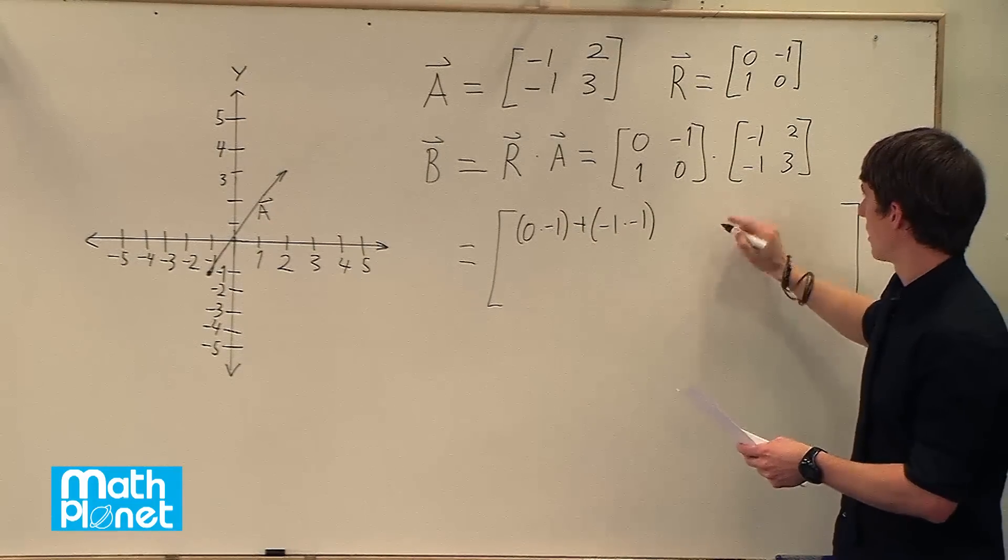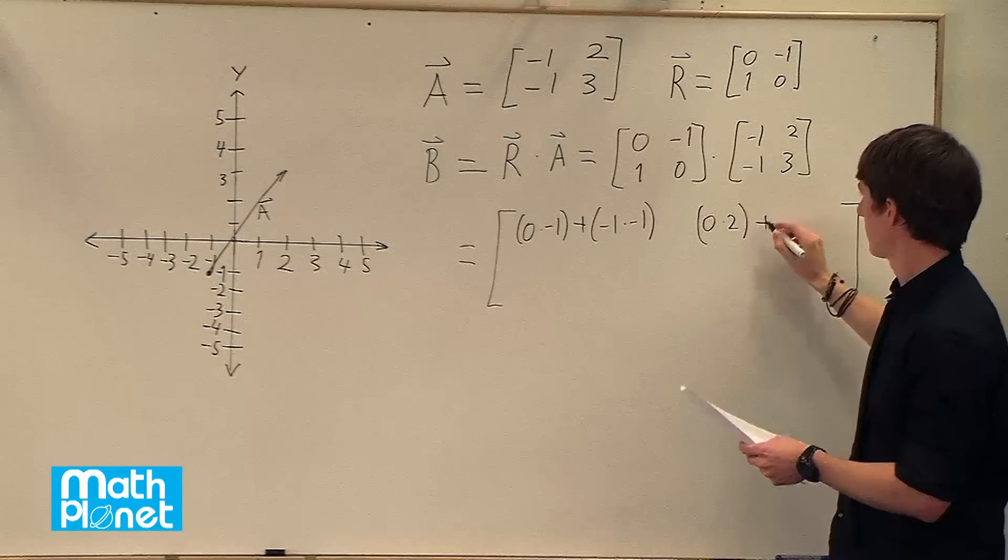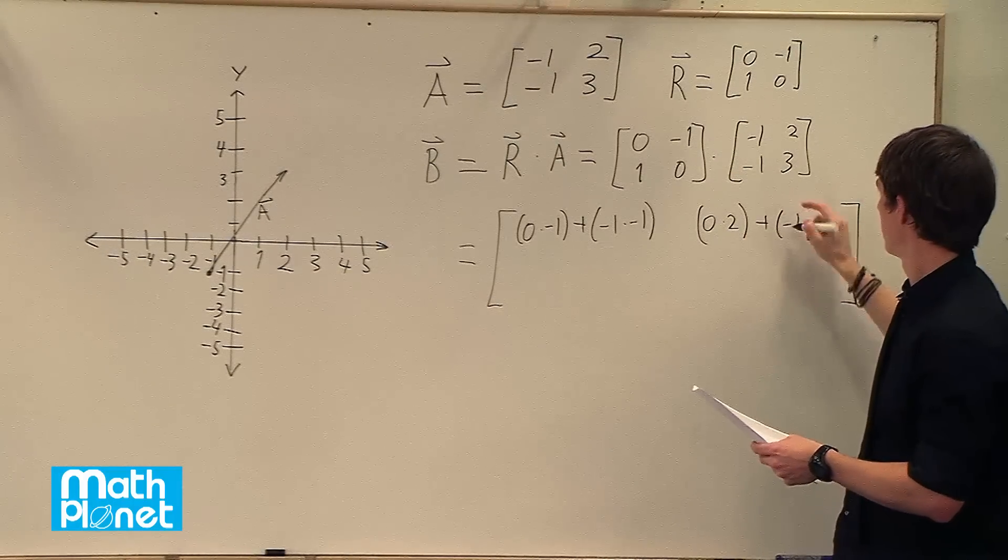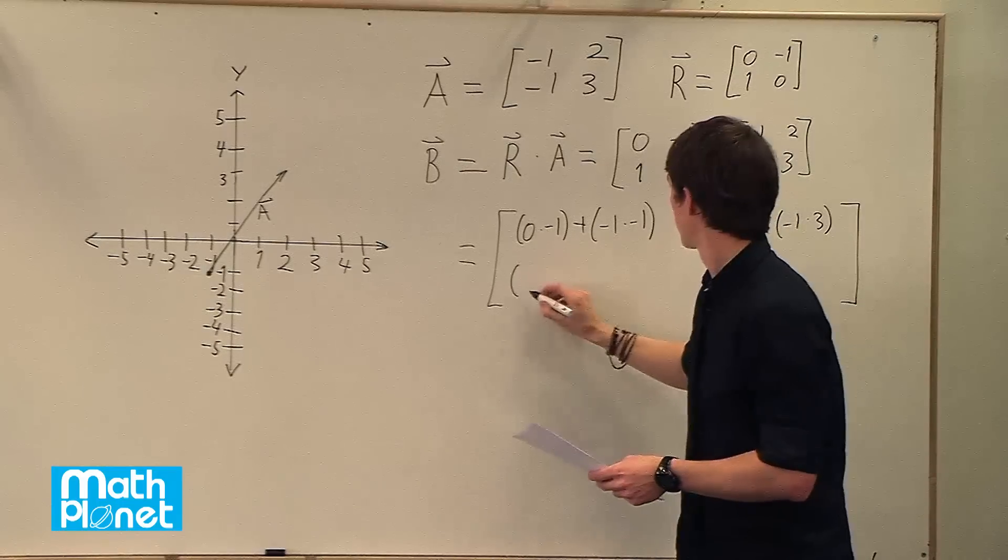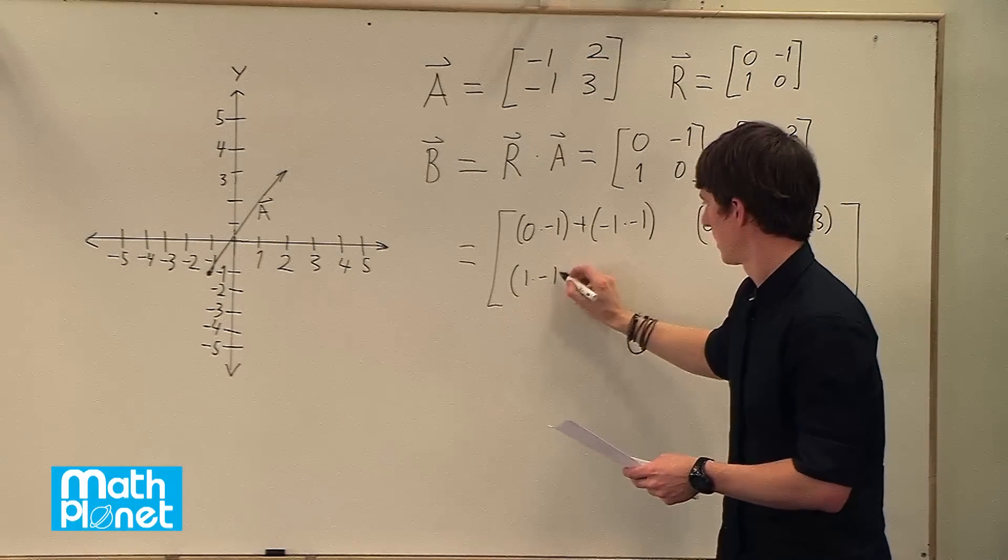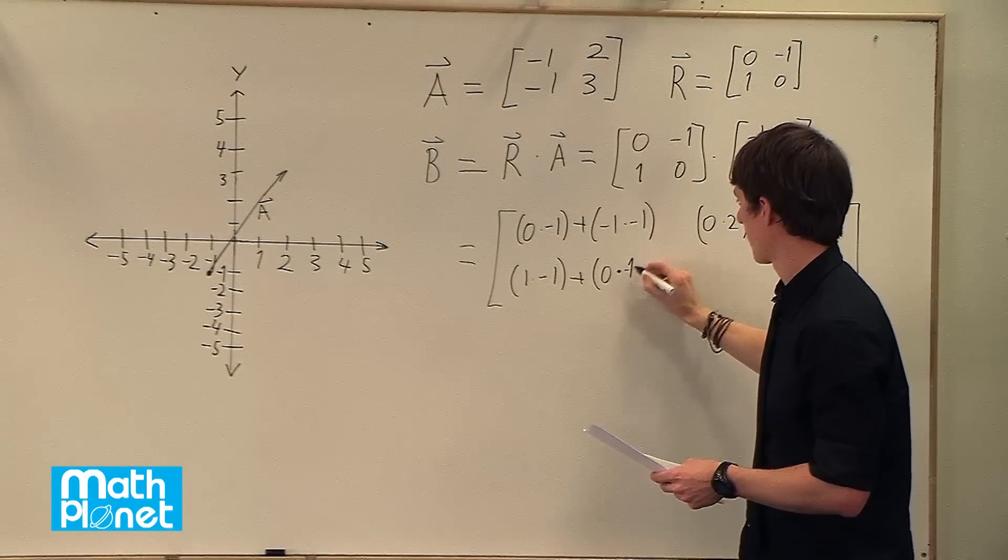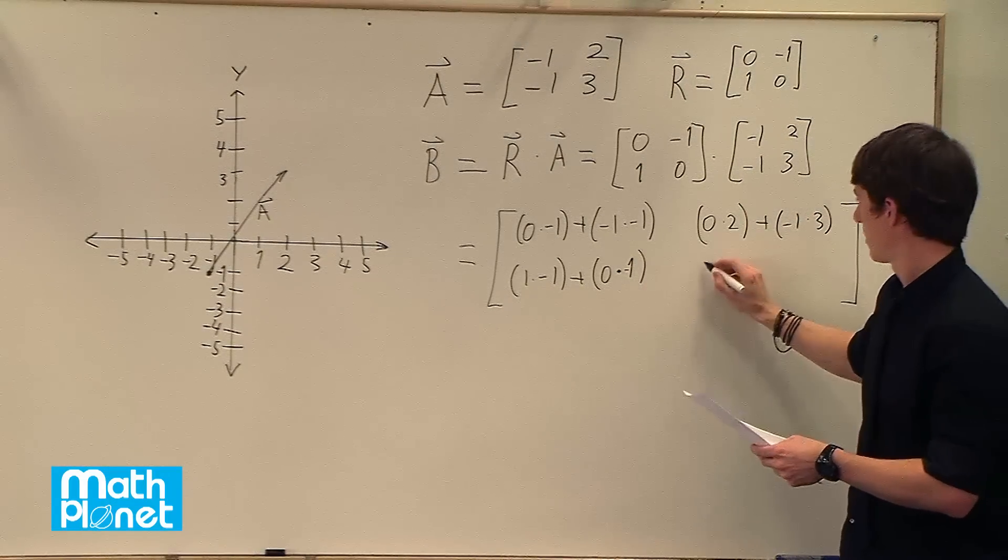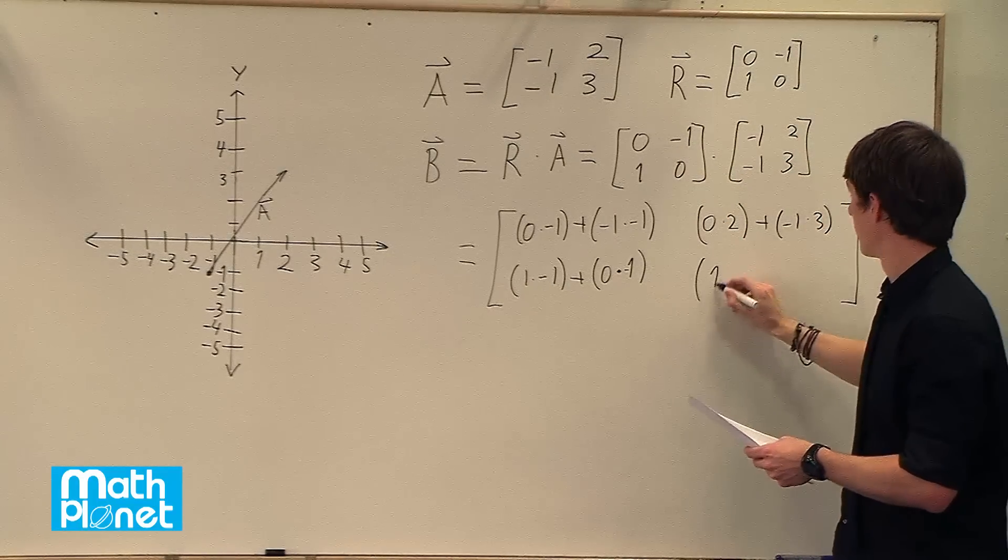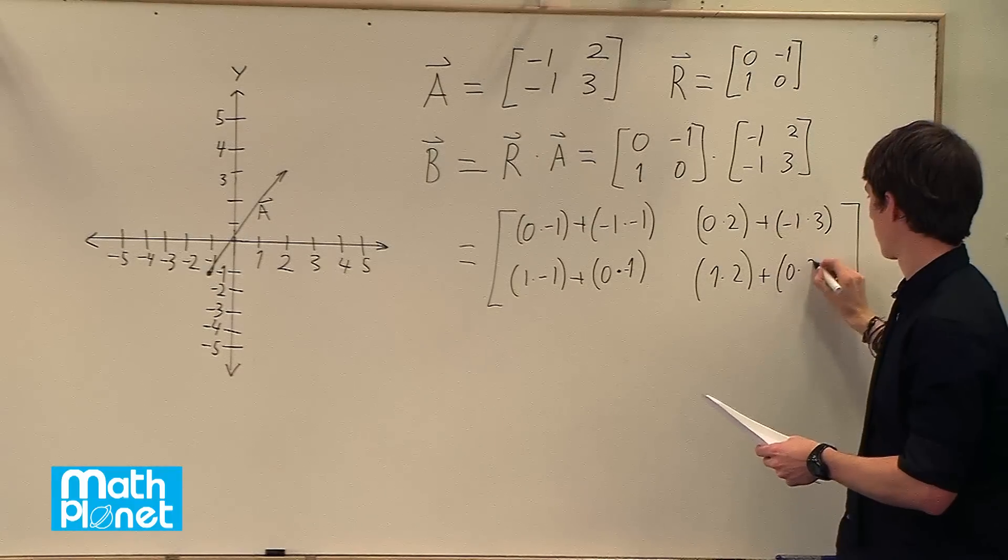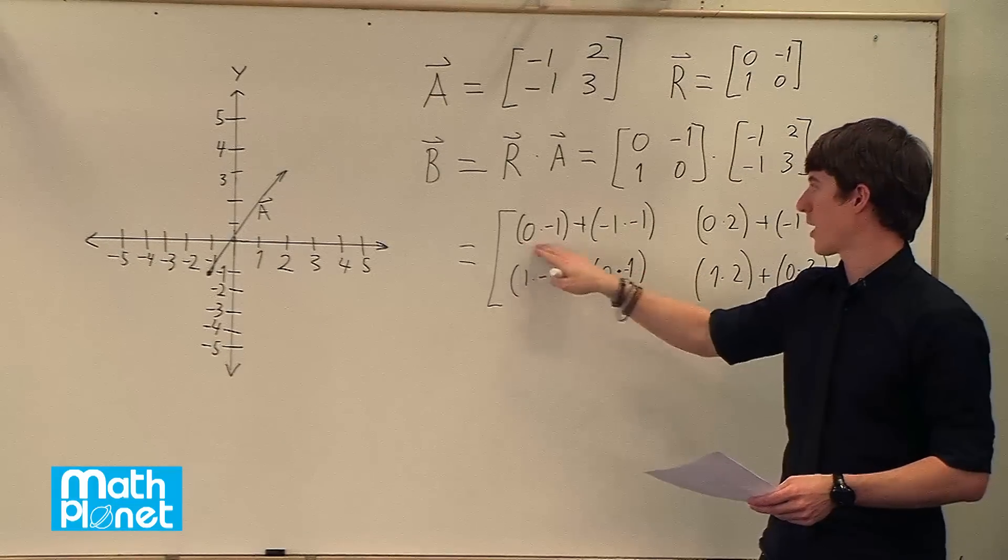This one is going to be 0 times this 2, plus this negative 1 times this 3. Now we have this row and this column. So 1 times negative 1 plus 0 times negative 1. And then this one is 1 times 2 plus 0 times 3. So if you can remember row column, then you can remember how to multiply each of these out.